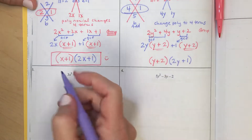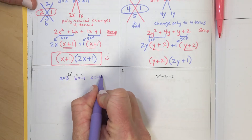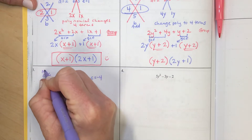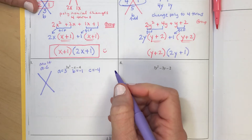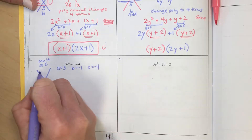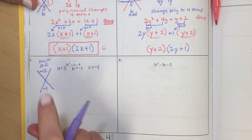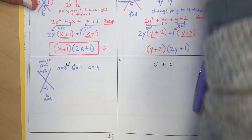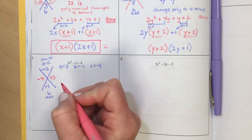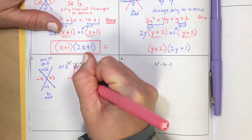Next example: A is 3, B is negative 1, and C is negative 4. For the big X, A times C goes at the top, and B goes at the bottom. 3 times negative 4 is negative 12, and B is negative 1. What two numbers multiply to make negative 12 and add to make negative 1? That's negative 4 and positive 3. So the middle term splits into negative 4X and positive 3X.